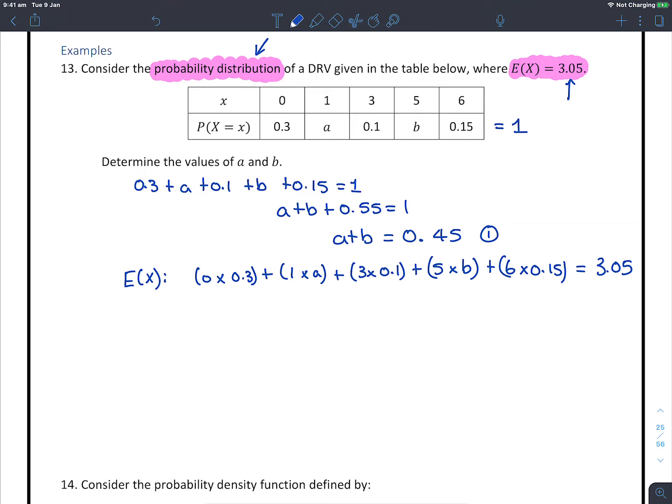If we go through and do those multiplications and clean up what we have, we'll have a plus 5b plus 1.2 equals 3.05. So a plus 5b equals, take away 1.2, that's 1.85.